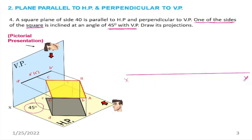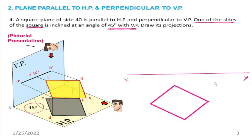In the top view, the true shape is a square. The square is drawn with one edge at 45 degrees inclination to the XY reference line. We label the corners: a, b, c, d. The inclination of edge CD with VP is 45 degrees. We draw the square at 45 degrees inclination in the top view.